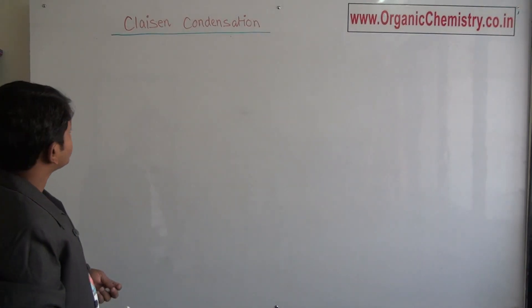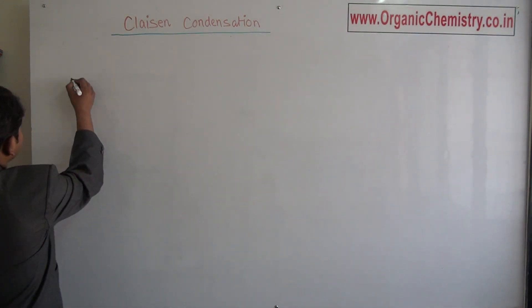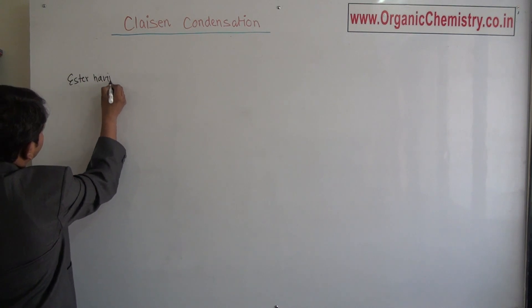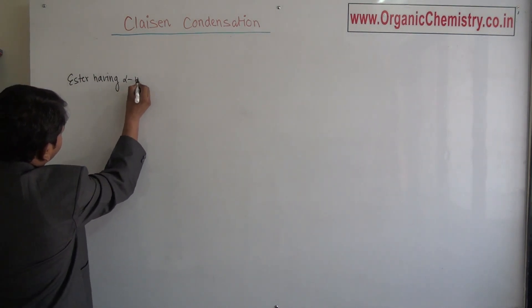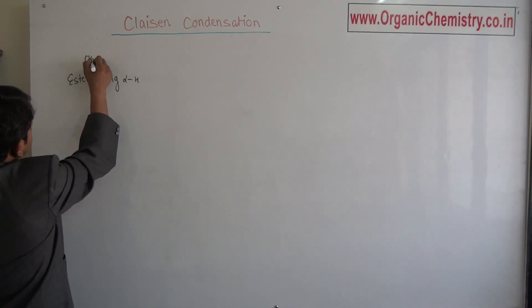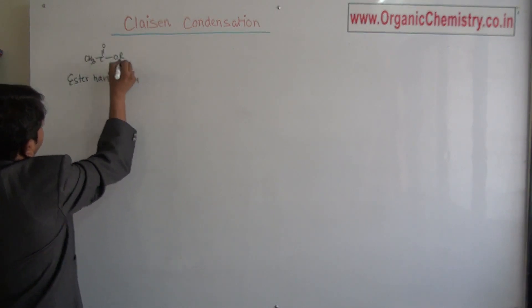Claisen condensation. The substrate for Claisen condensation is ester having alpha hydrogen. Simplest ester is O-R.